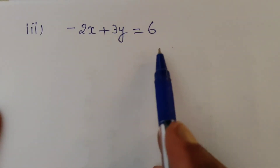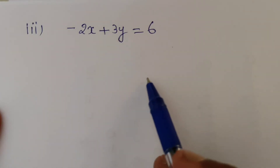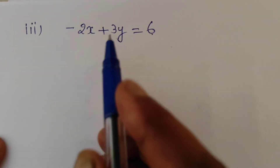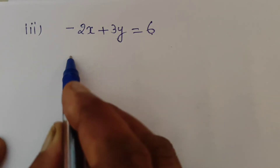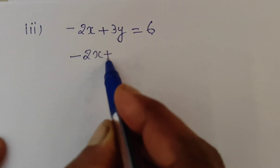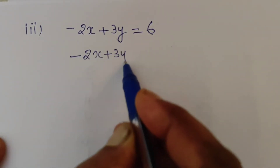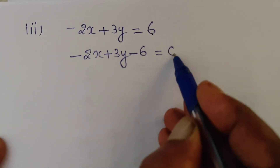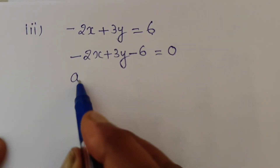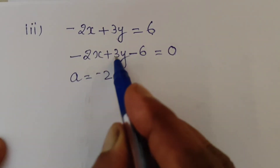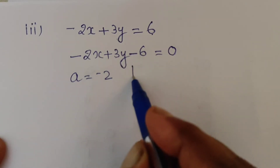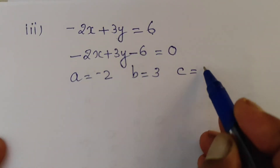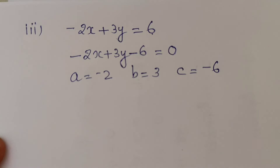Part (iii): negative 2x plus 3y. Transposing the constant term, negative 6, we get negative 2x plus 3y minus 6 equal to 0. Therefore, a is equal to negative 2, b is equal to 3, which is the coefficient of y, and c is the constant term, negative 6.